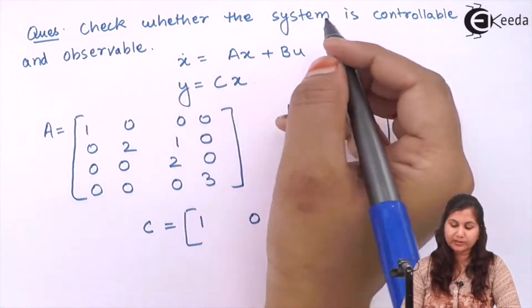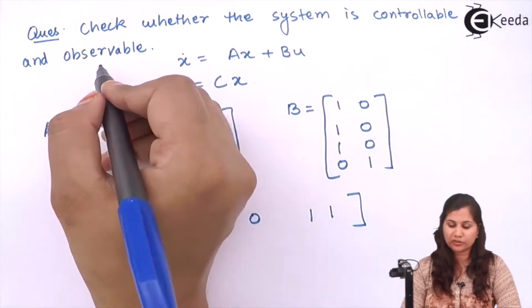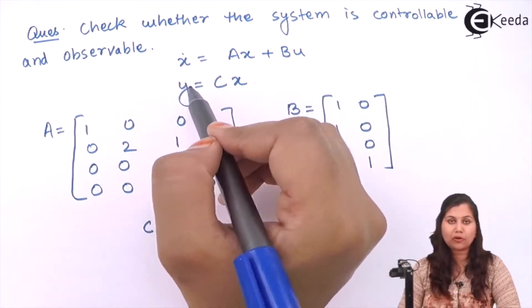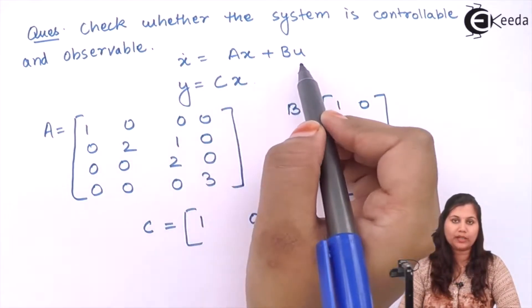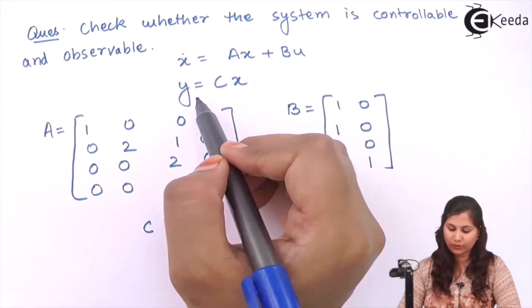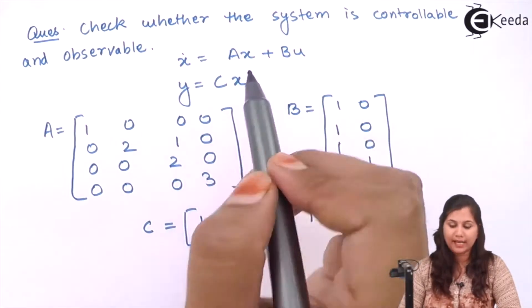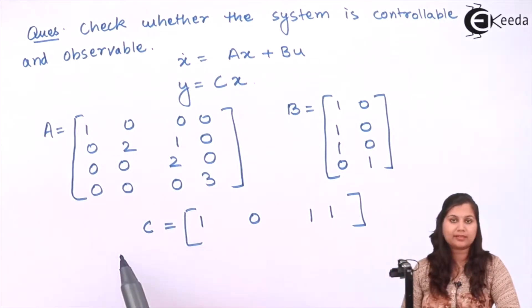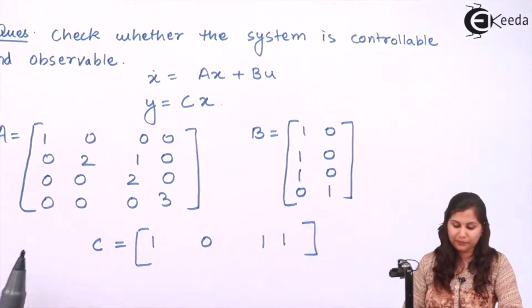Our problem is to check whether the system is controllable and observable. The state space model is: x-dot equals Ax plus Bu, and y equals Cx, and the A, B, C matrices are given to us. So let's try to solve this problem.